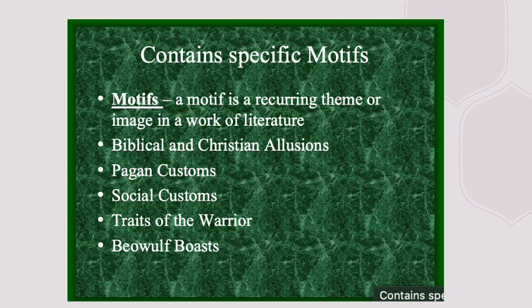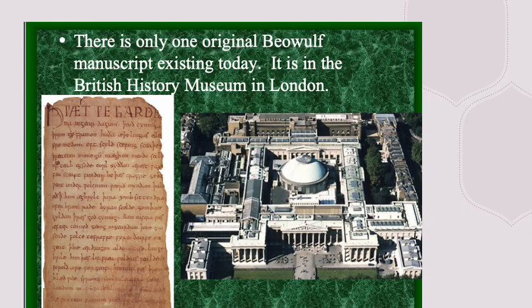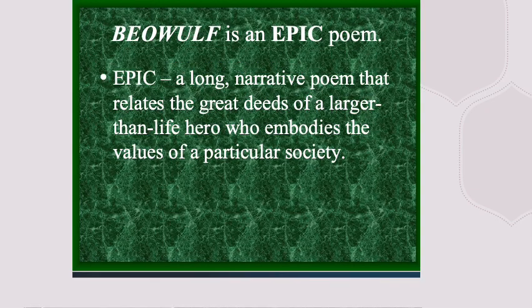The recurring themes include biblical and Christian allusions, pagan customs, social customs, traits of a warrior, and of course how Beowulf boasts. Although the people in the poem were pagan, we see biblical and Christian allusions, which is why it's believed this poem was actually collected or written by monks. There is only one original Beowulf manuscript and it's in a British museum in London.